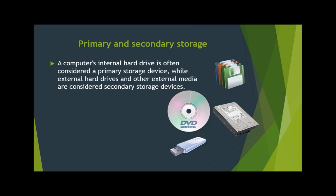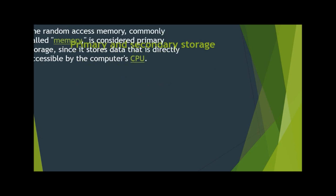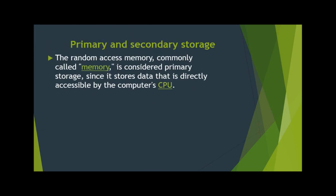However, primary and secondary storage may also refer specifically to the components inside the computer. In this case, primary storage typically refers to random access memory, while secondary storage refers to the computer's internal hard drive. Random access memory, commonly called memory, is considered primary storage, since it stores data that is directly accessible by the computer's CPU.